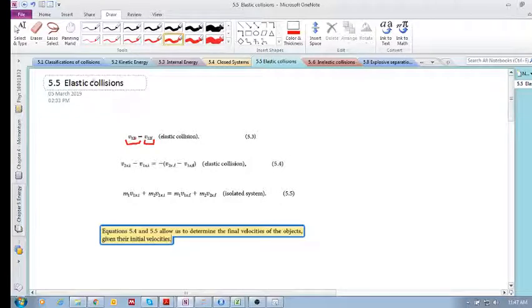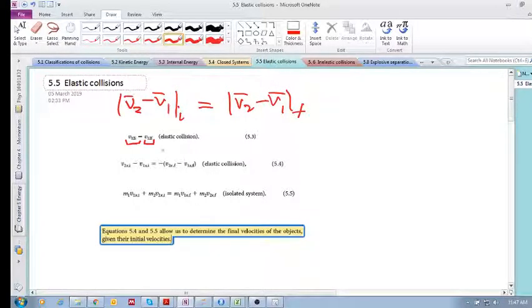That means the magnitude of v2 minus v1 initial is equal to the magnitude of v2 minus v1 final. The relative speeds are the same in an elastic collision. In terms of velocities, we know that v2 minus v1 initial is the negative of v2 minus v1 final. It's because the directions change, so even though they're the same magnitude, the relative velocity final is the opposite direction of the relative velocity initial.